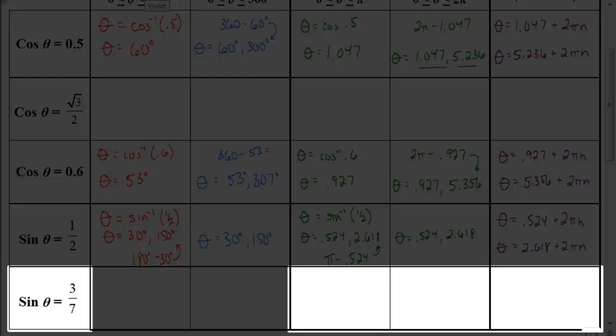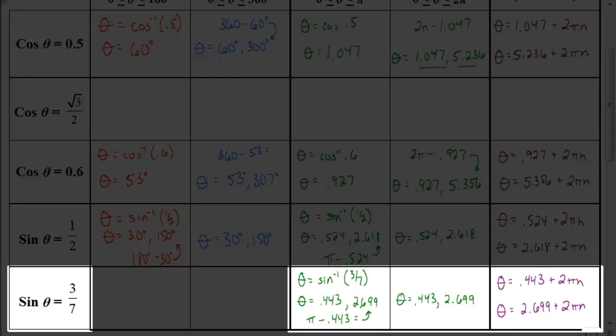Now do the same for sine of theta equals 3/7, but only for the radian values — just the last three cells. You should have gotten 0.443 and 2.699. Make sure your calculator is in radian mode, then take the inverse sine of 3/7 to get 0.443. Subtract 0.443 from π to get 2.699. The general solutions are 0.443 + 2πn and 2.699 + 2πn.